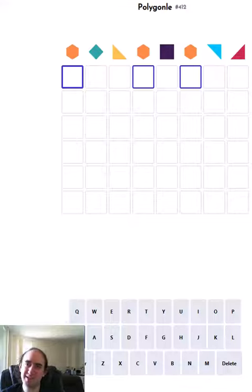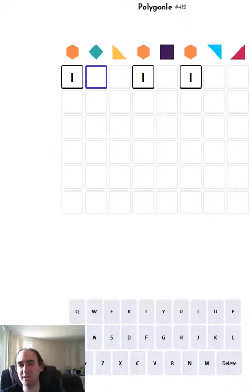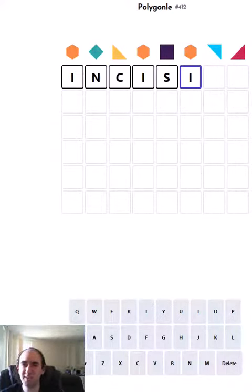So we've got a tripled letter today and everything else is not duplicated at all. Usually when we've got a tripled letter I tend to think maybe an E or an S as my first thought, but today I think maybe an I might be the way to go. Incisive.